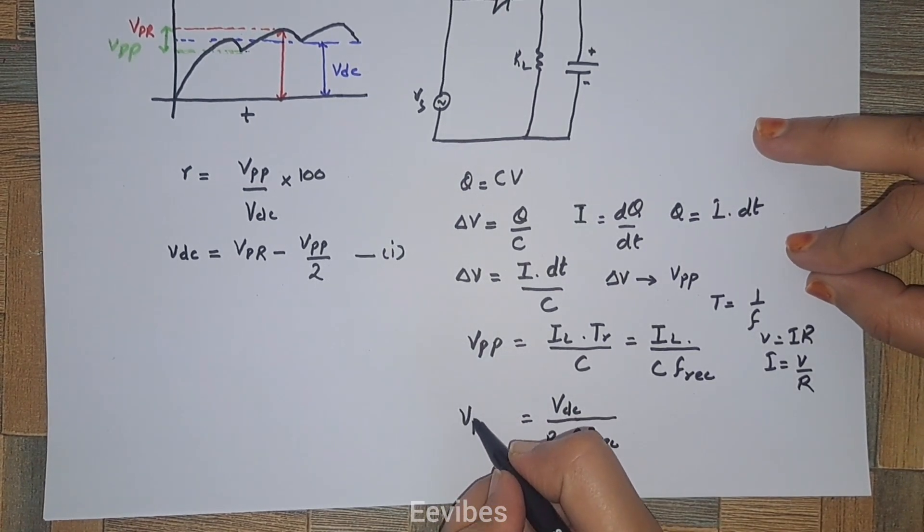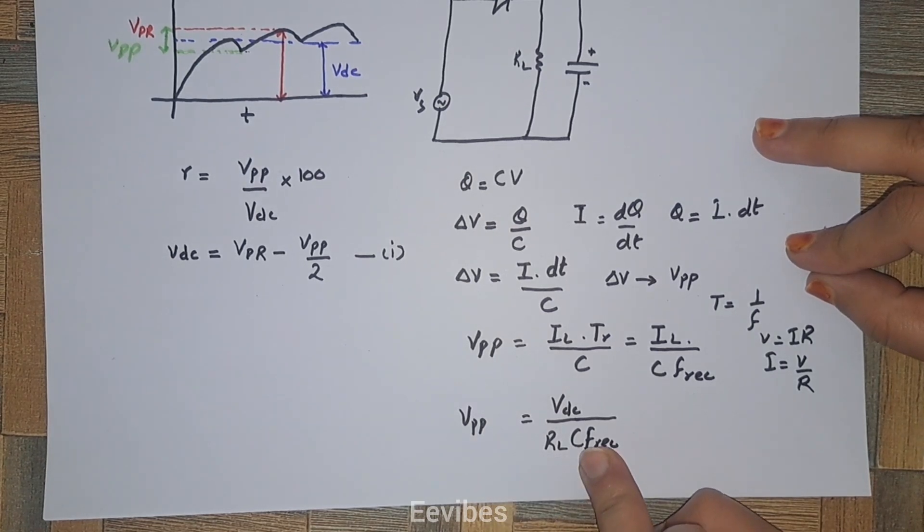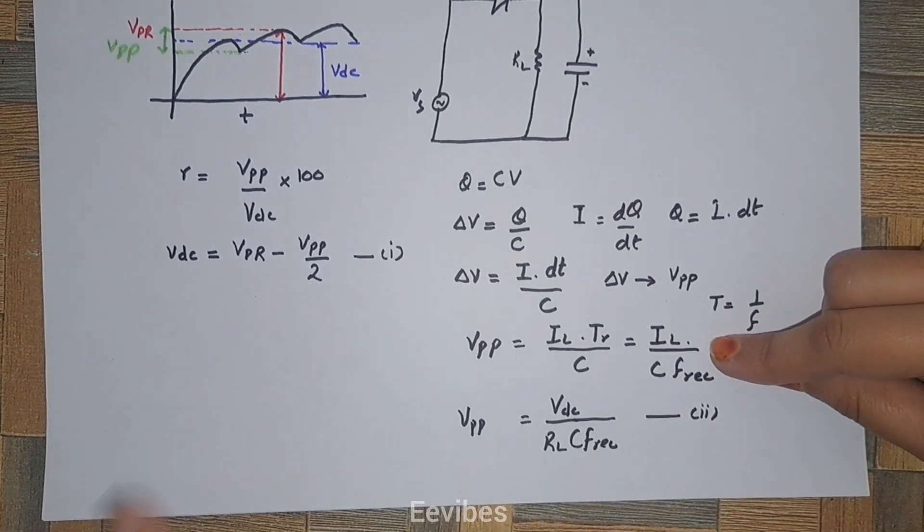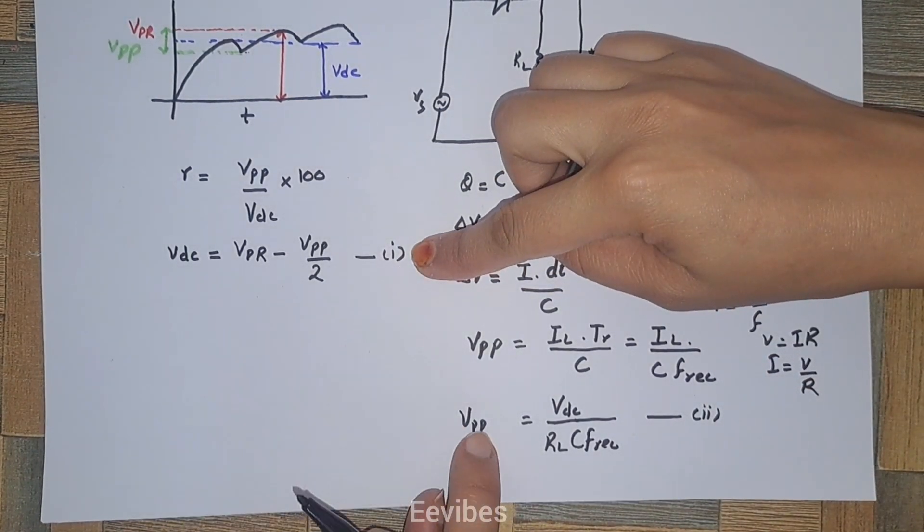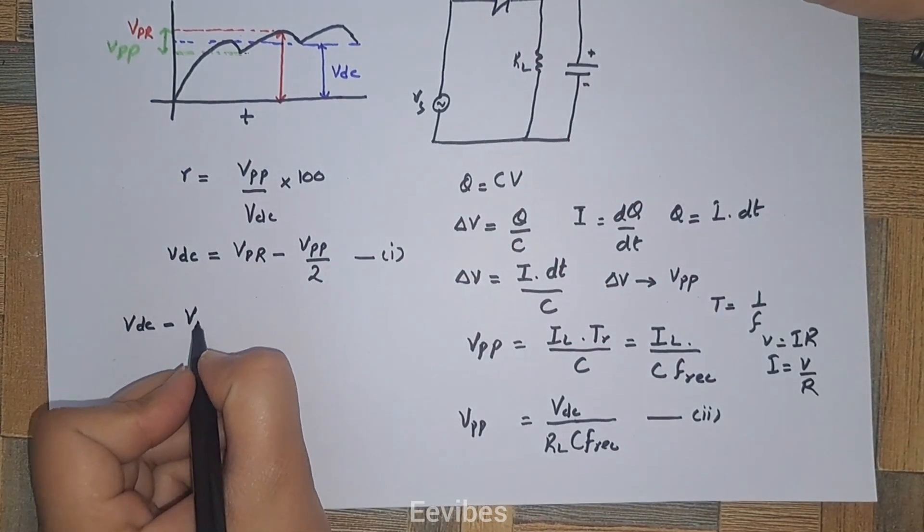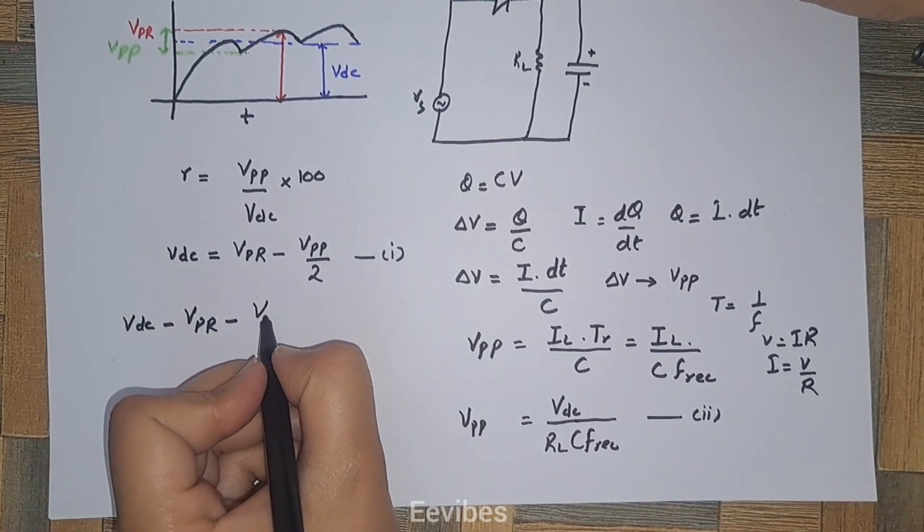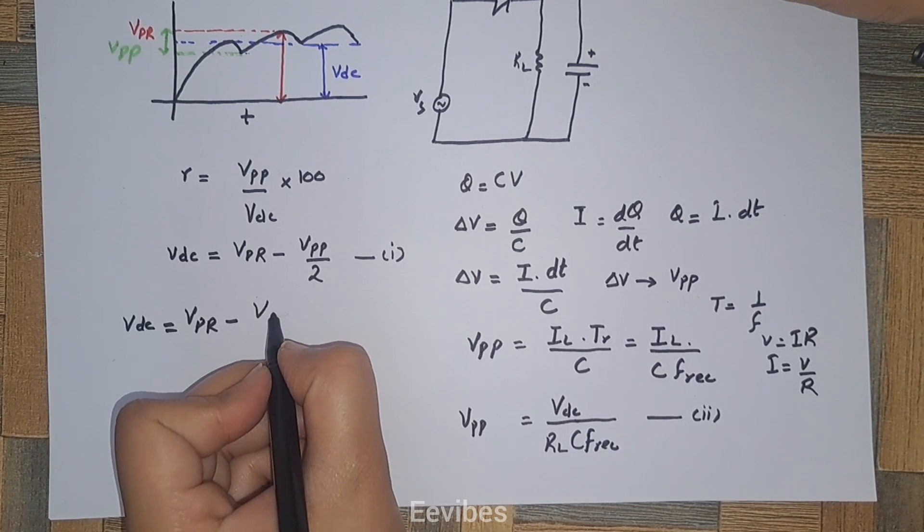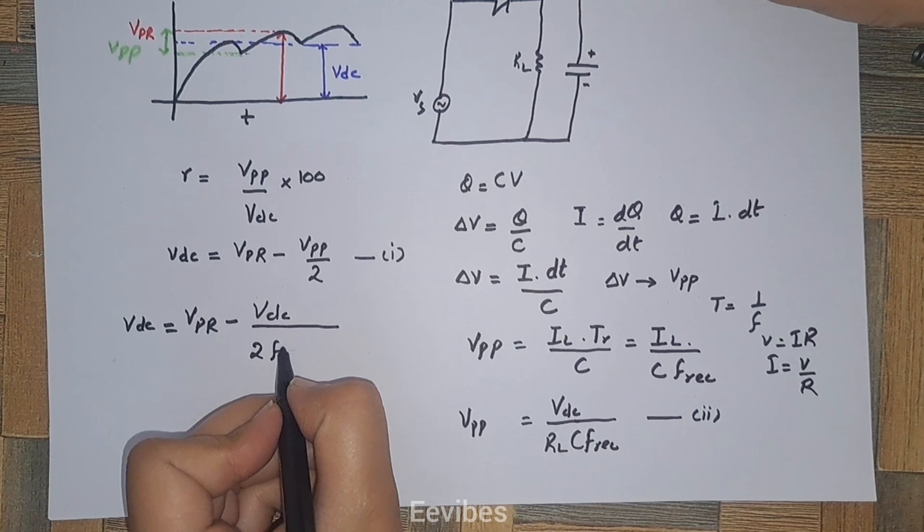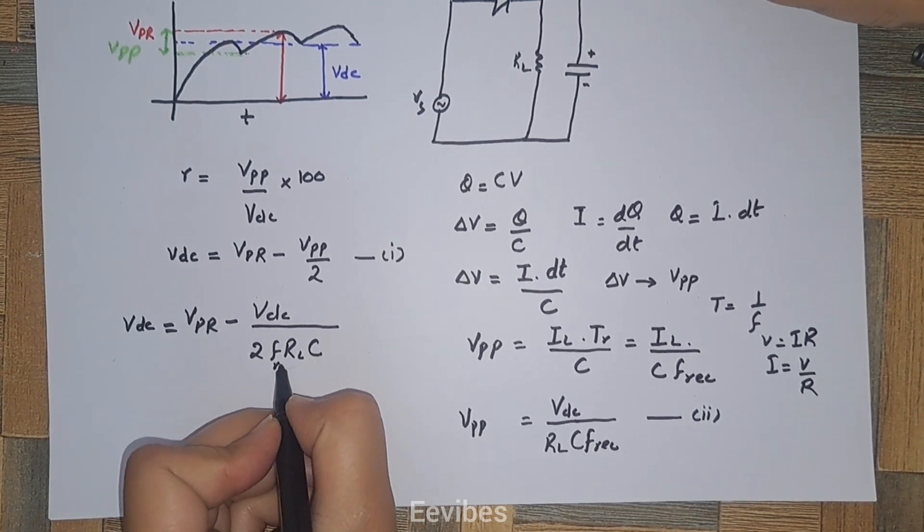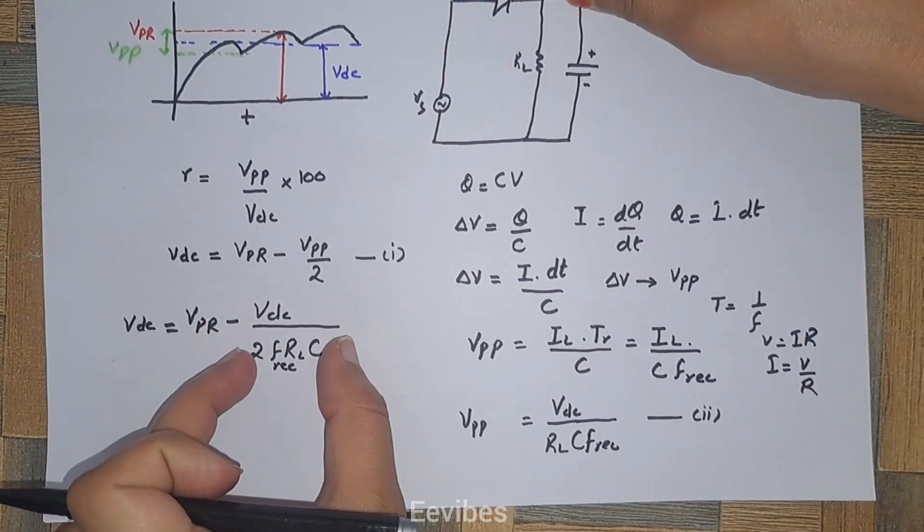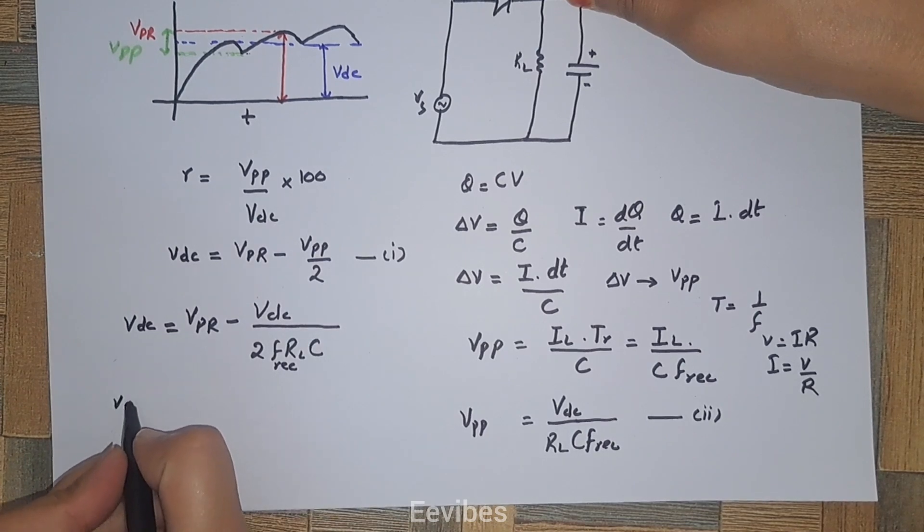We have the expression for VPP, which is equation 2. Now substitute this into equation 1. We will get VDC equals VPR minus VDC divided by 2 F RL C, where F is the frequency of the rectified output voltages. Taking this expression to the left-hand side, we get VDC plus VDC divided by 2 F RL C equals VPR.